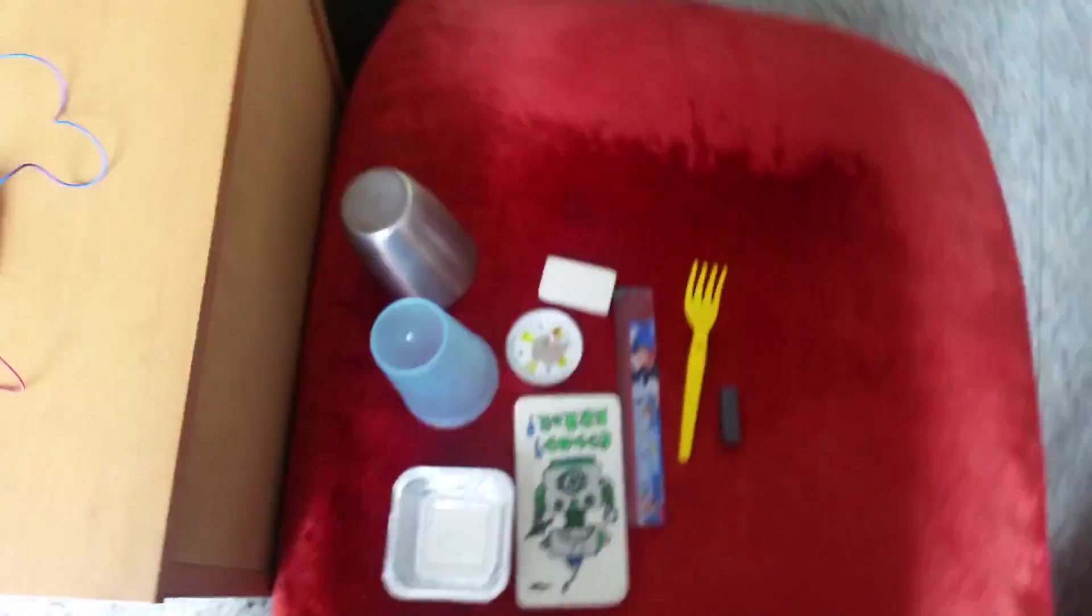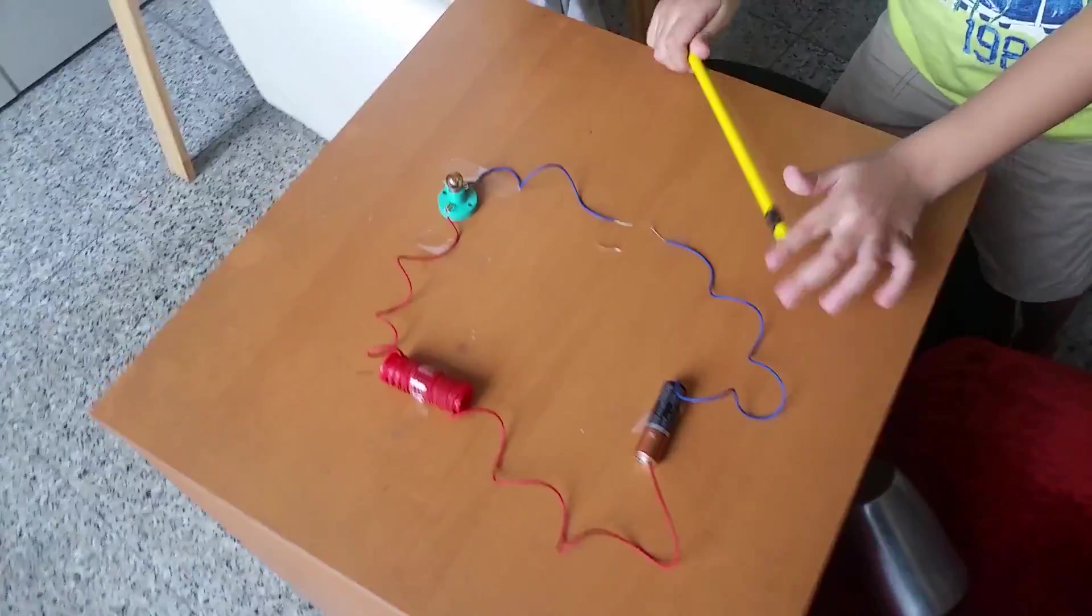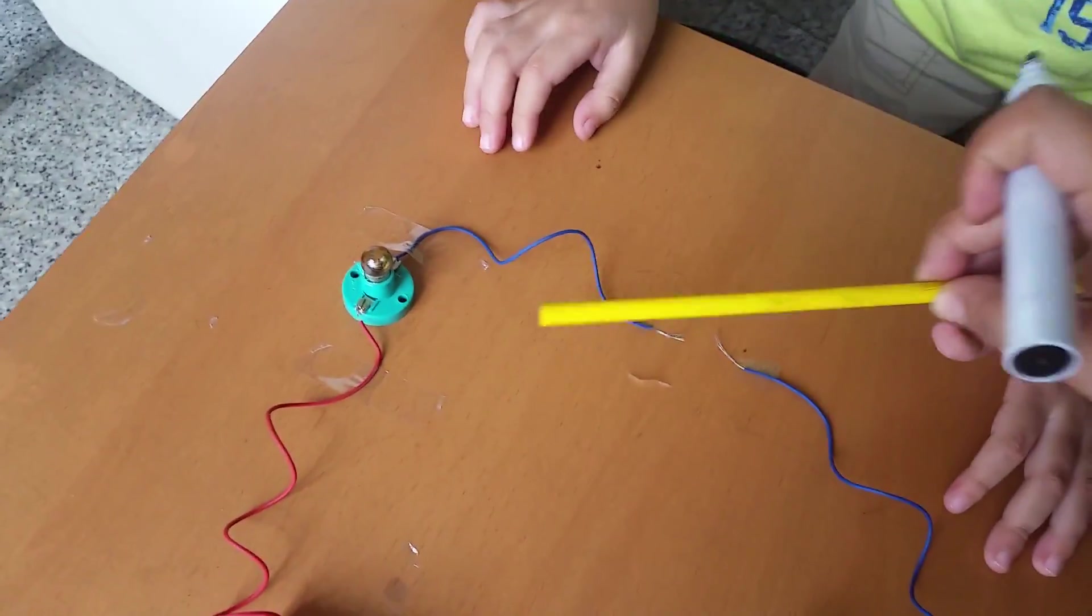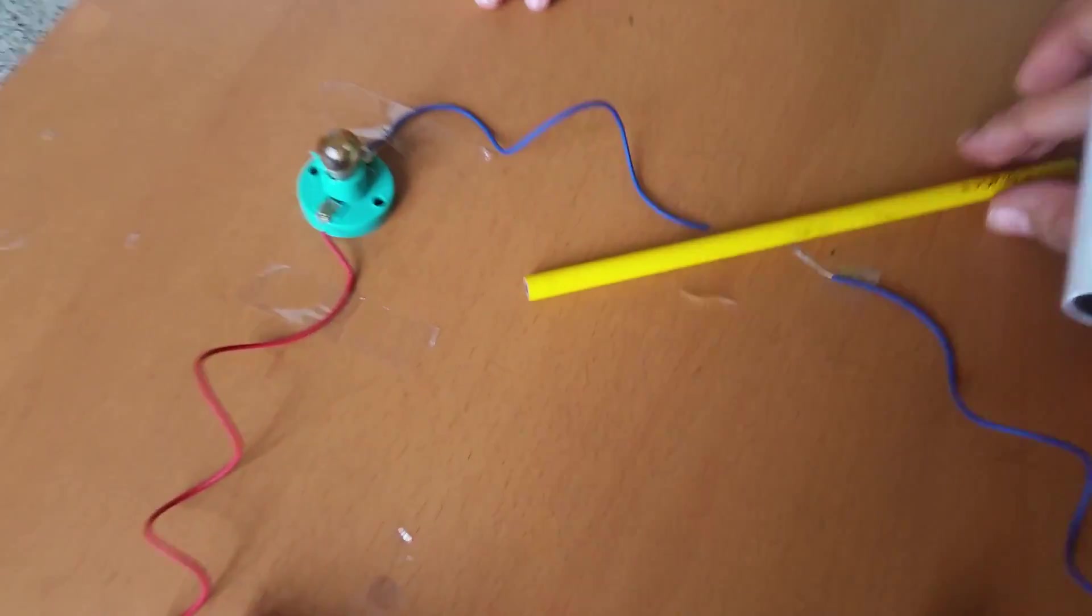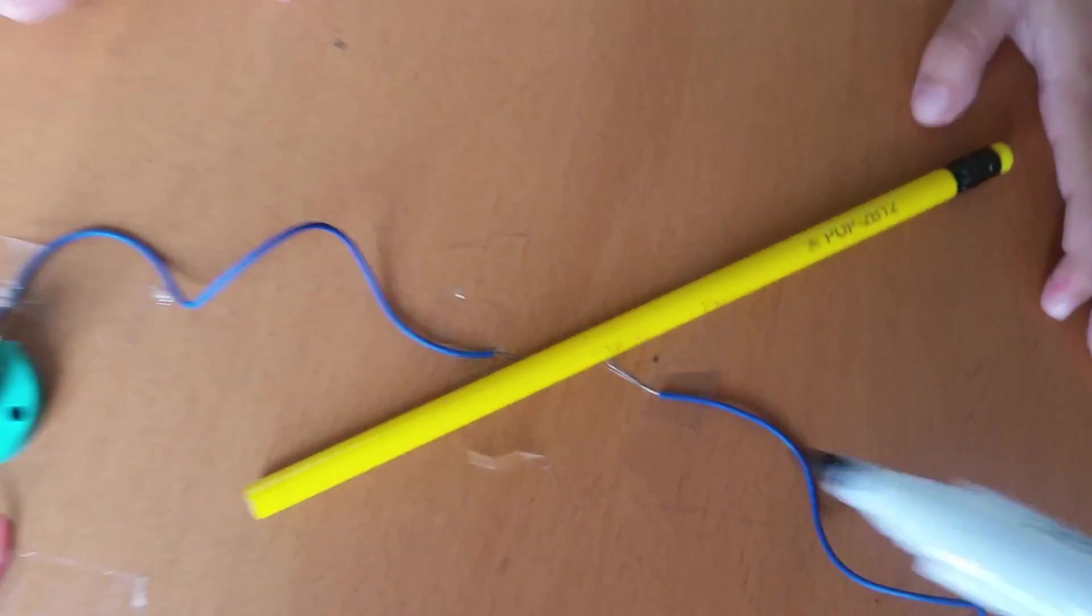What is next? Should we try eraser? We can choose this. Oh pencil. Okay. Try that it touches both the wires. Do you see that? To complete the circuit the object should touch both the wires.